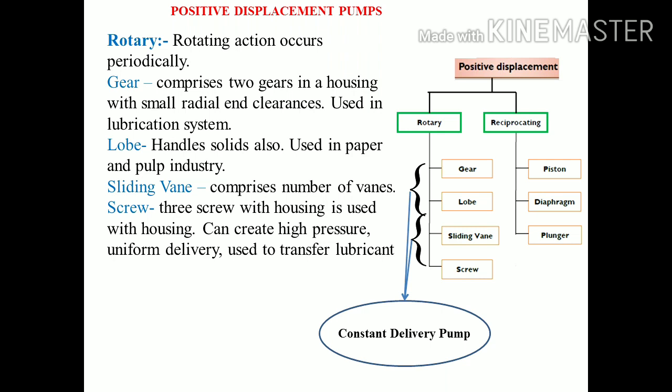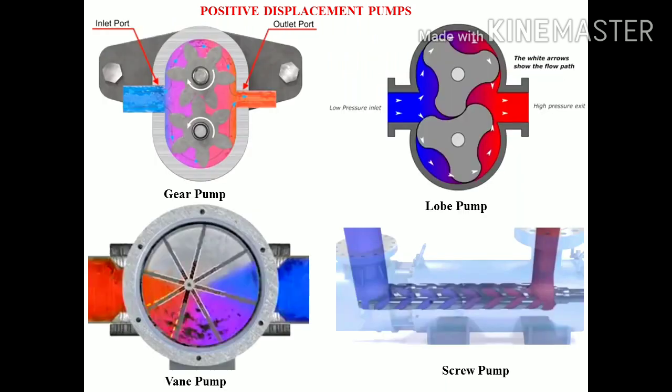I will discuss the details of the sliding vane pump further in the next section. There is another pump — the screw pump. It uses screws with housing, can create high pressure, and provides uniform delivery. It is used for constant lubrication; basically we use the screw pump for lubrication purposes.